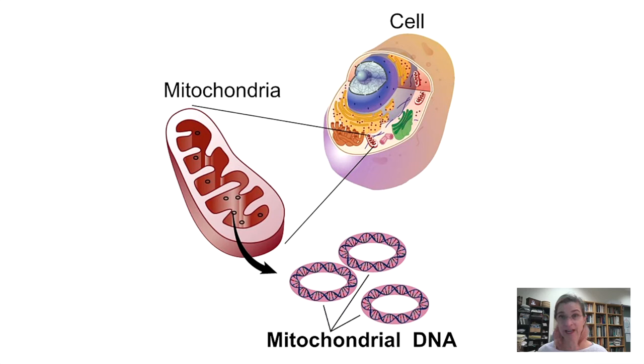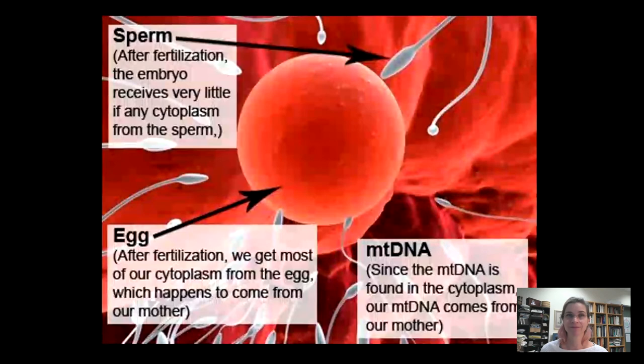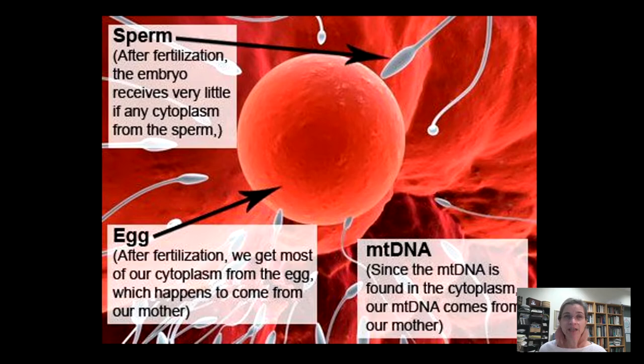Mitochondrial DNA is circular, unlike your nuclear DNA which is in long strands, and it's much shorter — only about 16,000 base pairs and only 37 genes. The other really important distinction between the nuclear and mitochondrial genome is how you inherit it. The nuclear genome is half from mom and half from dad, but the mitochondrial genome is entirely from mom.